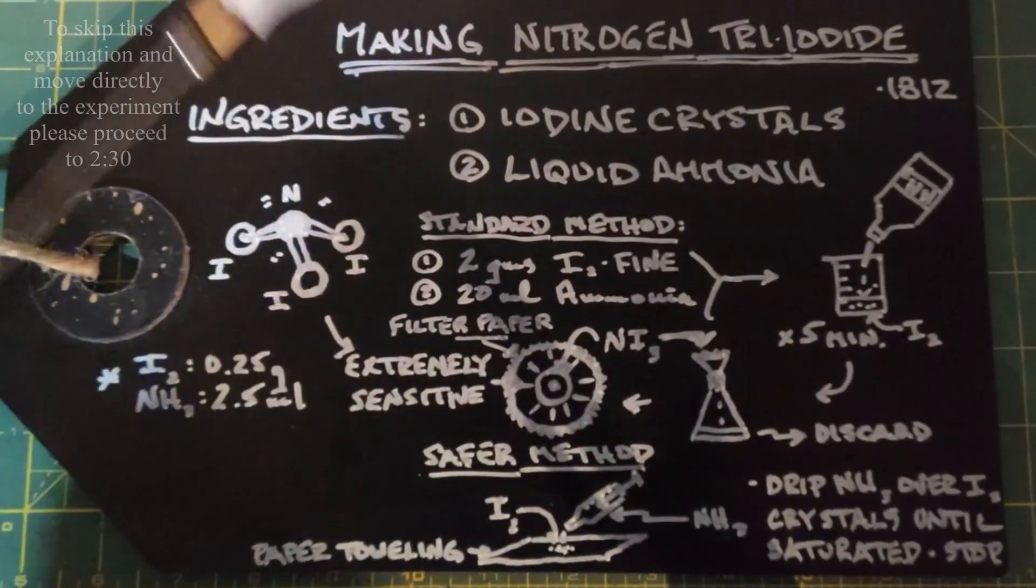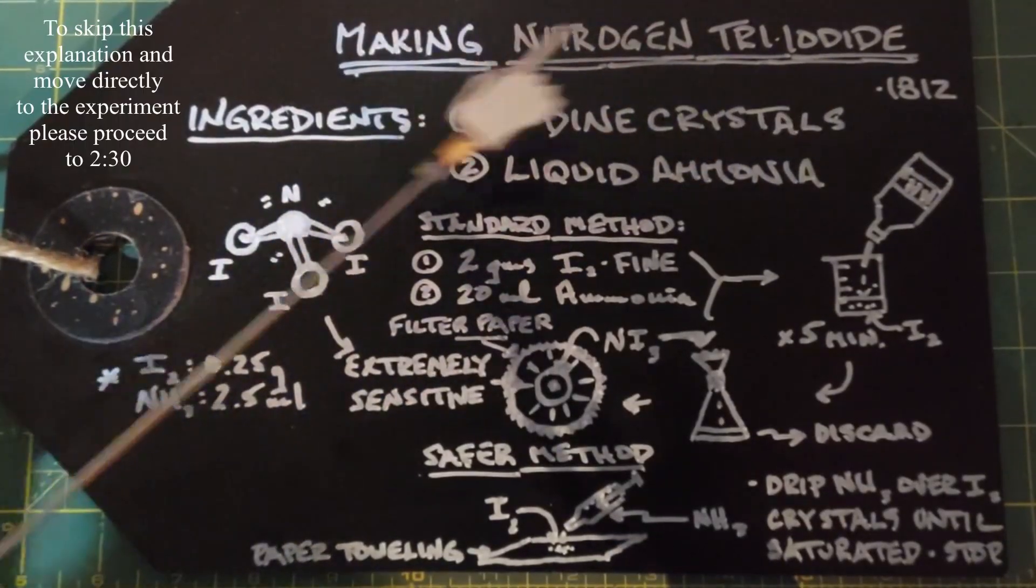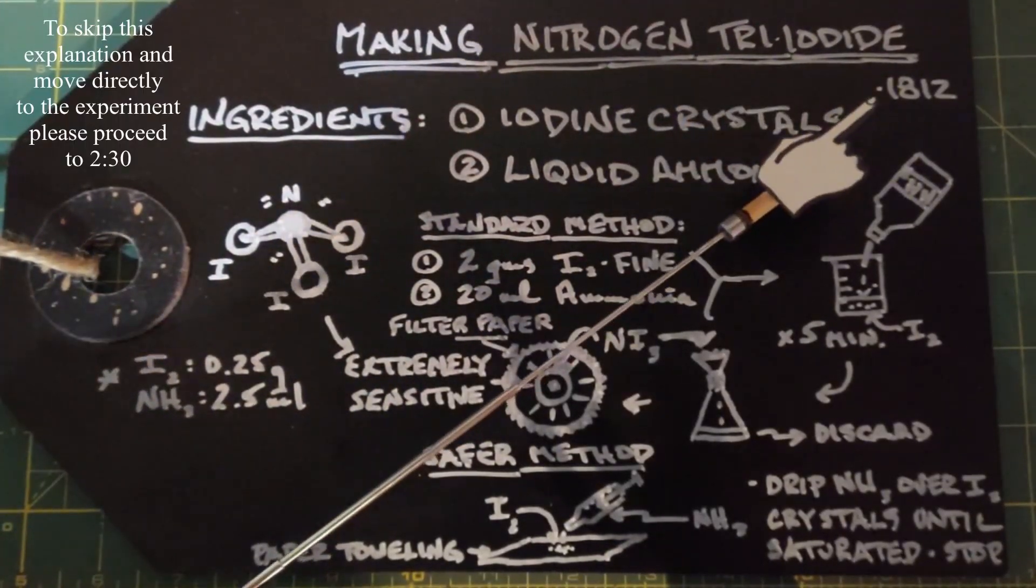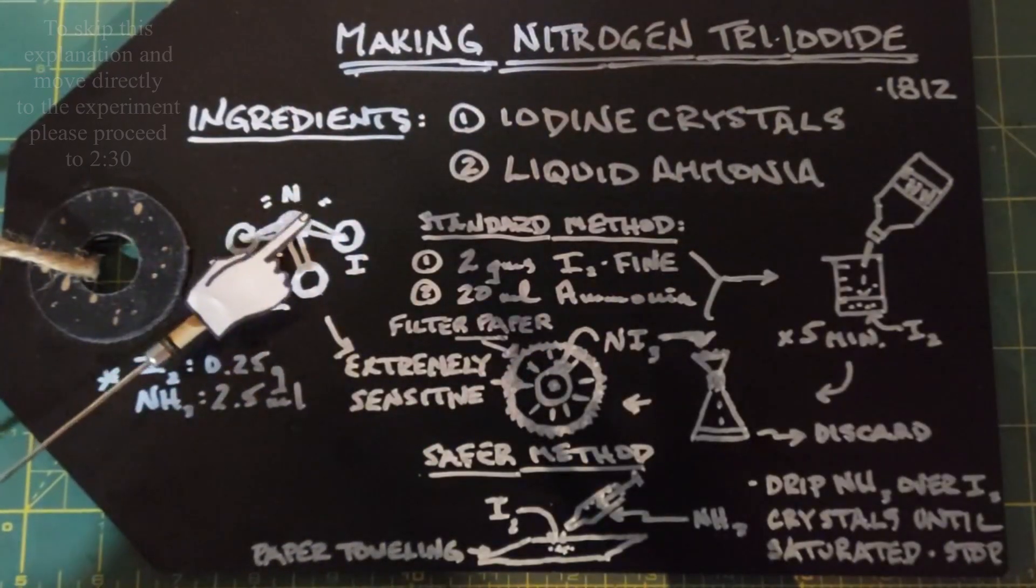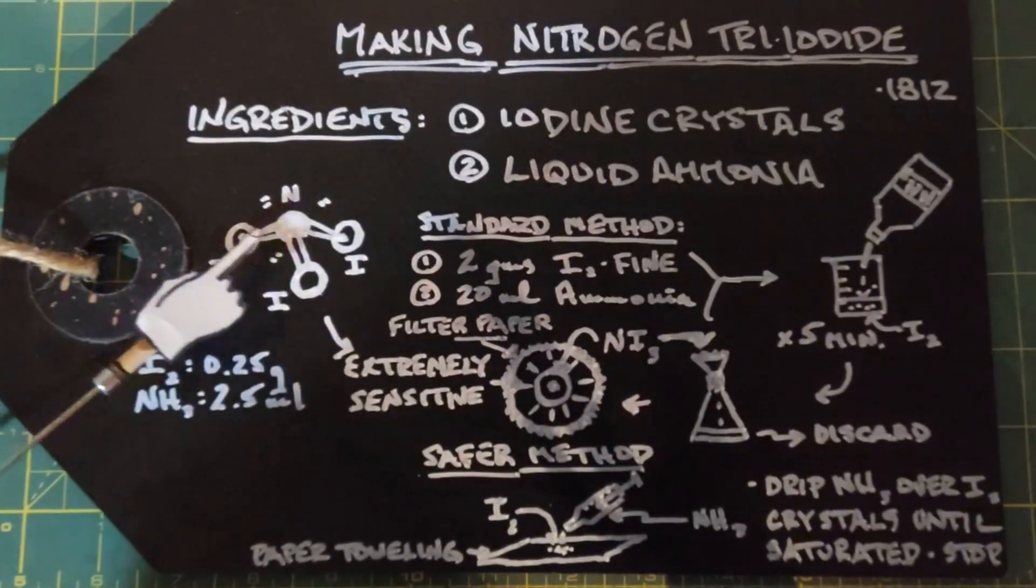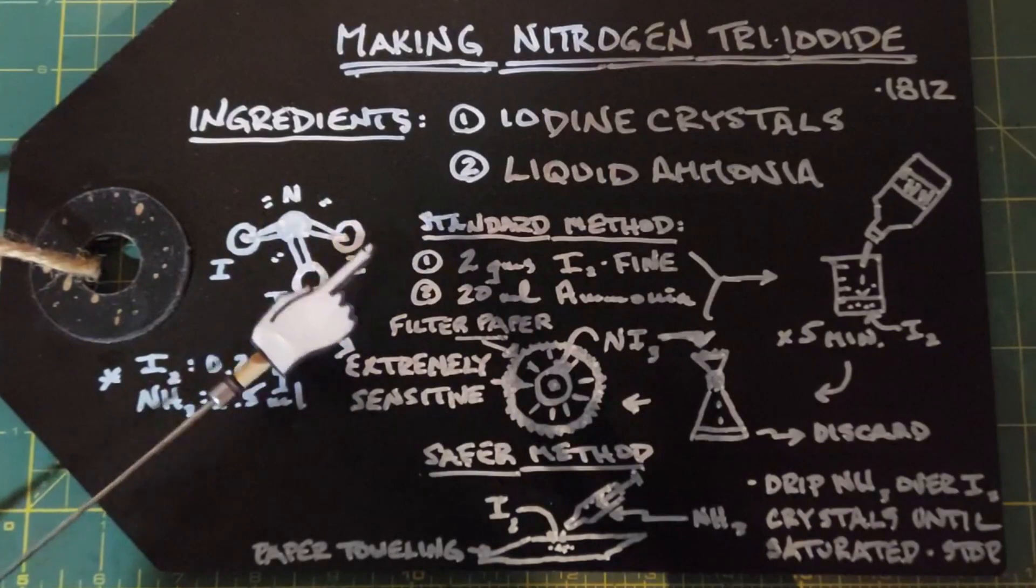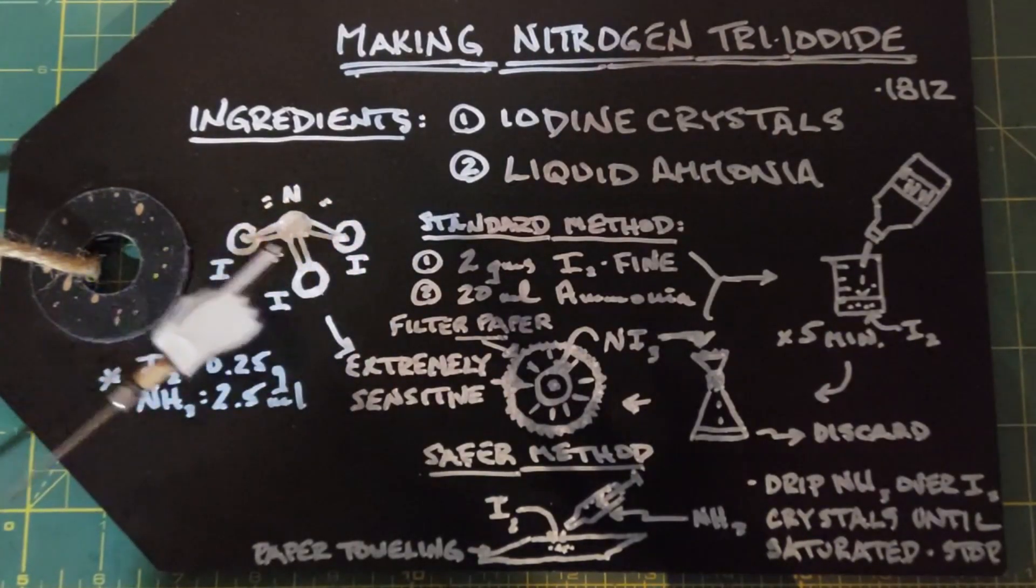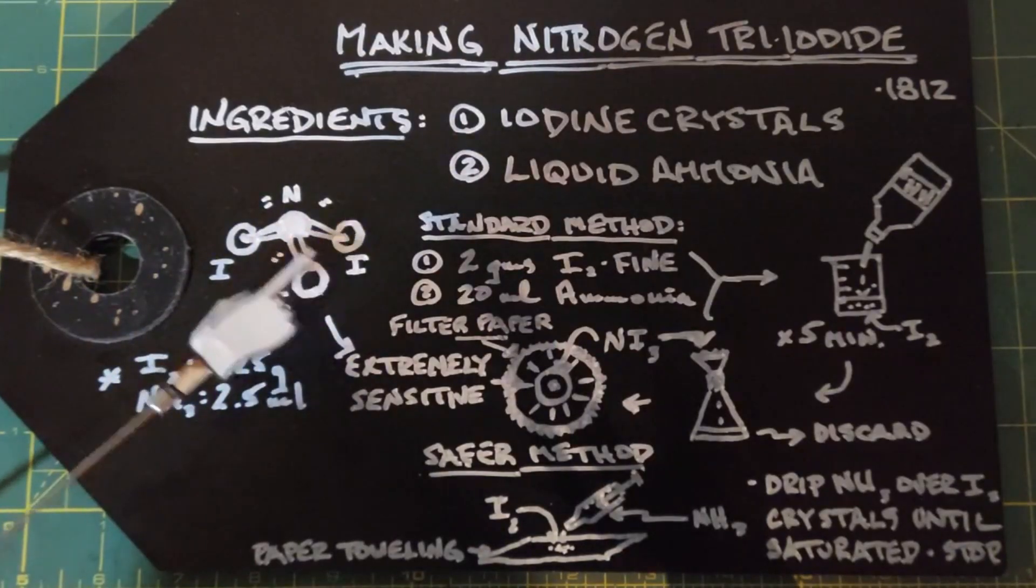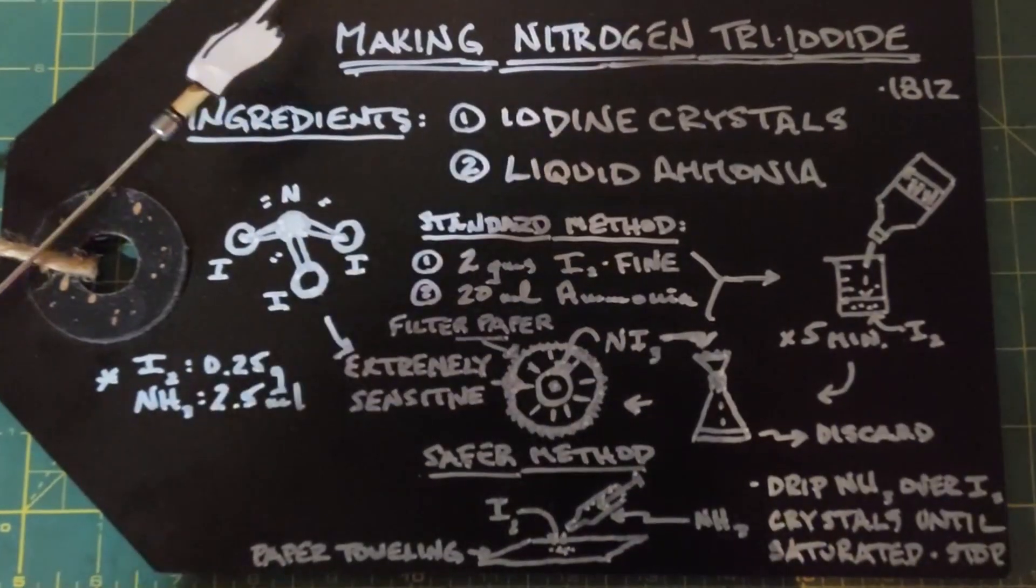In this video we are going to look at making nitrogen triiodide, a compound discovered in 1812. This is the general makeup of it: one nitrogen atom with three iodine atoms connected to it. When it's wet it's fine, but when it dries these bonds between the iodine and nitrogen become unstable and they want to break apart. It takes very little to break them. Once you break one nitrogen-iodine bond, the rest go and the entire amount detonates.